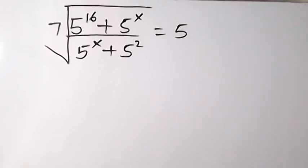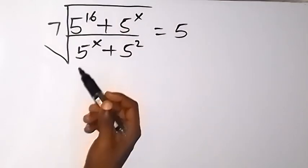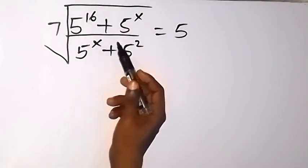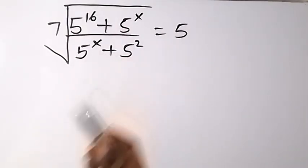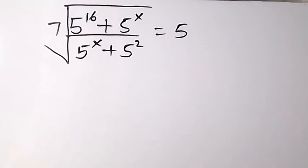Welcome to this class, and thank you for joining us. Here we want to solve this problem: we have the 7th root of 5 raised to power 16 plus 5 raised to power x, all over 5 raised to power x plus 5 raised to power 2, equals to 5.